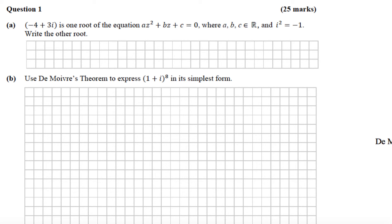This is the 2016 Leaving Cert Higher Level Paper 1, question number 1. Part A says: minus 4 plus 3i is one root of the equation az squared plus bz plus c equals 0, where a, b and c are elements of the real numbers, and i squared is negative 1. We're asked to write the other root. If we have a complex root for a quadratic equation and the coefficients are real, the roots occur in conjugate pairs. So if one root is minus 4 plus 3i, the other root would be minus 4 minus 3i.